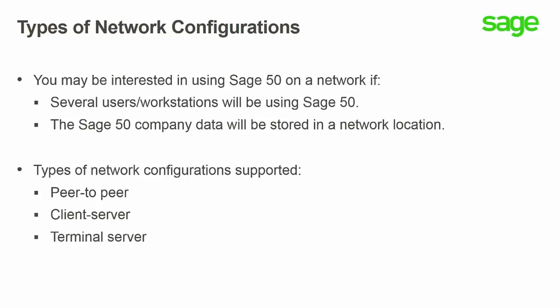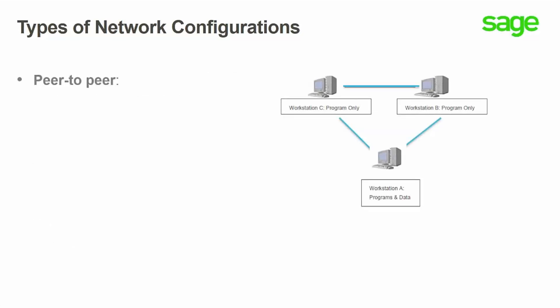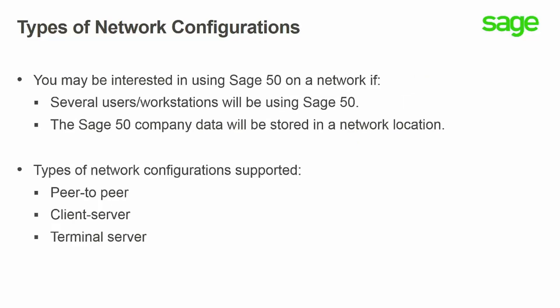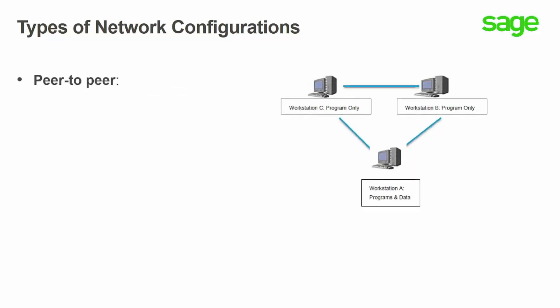Peer-to-peer networks are commonly used by small to medium businesses that do not have access to a dedicated server. In a peer-to-peer environment, several workstations are connected to the same network and share access to certain files which reside on one of the workstations in a shared location.